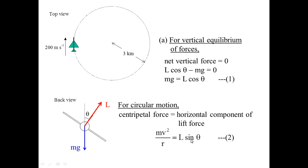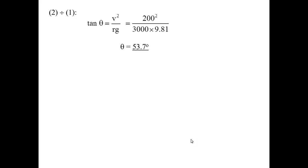To solve for theta, the easiest is to take equation 2 divided by 1. We end up with tan θ = v²/rg. From here, we substitute in the given values, and we get theta to be 53.7 degrees.